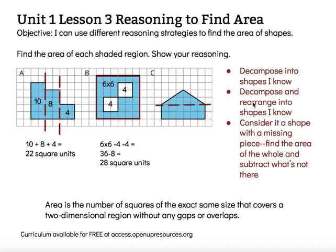If I cut off the top piece, I see a rectangle on the bottom, and I'm good at finding the area of rectangles. That's a 2 by 6 rectangle, so there are 12 squares in that part. I'm left with a triangular piece on top. I can cut that triangle in half, then rearrange those two triangular pieces together to form a rectangle that's 2 by 3. So the entire pentagon has an area of 18 square units: 12 plus 6.